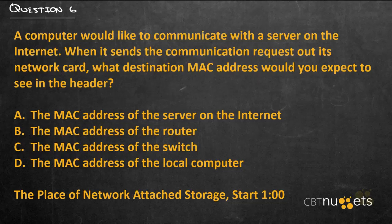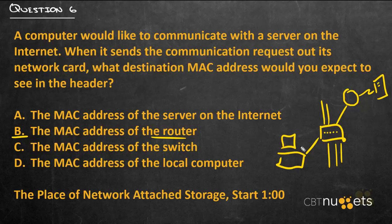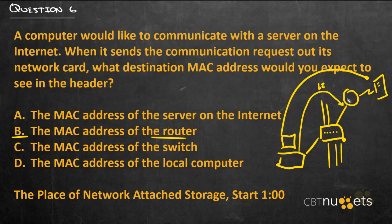Question number six: a computer would like to communicate with a server on the internet. When it sends communication requests out its network card, what destination MAC address would you expect to see in the header? The answer is B — the MAC address of the router. When a computer wants to leave the network to reach an internet server, it sends communication to the router while specifying the server as the final destination. That's why we have two layers of addresses: the layer two address gets it to the local router, and the layer three address — the IP address — tells the router the final destination, at which point the router uses its routing table to get it there.